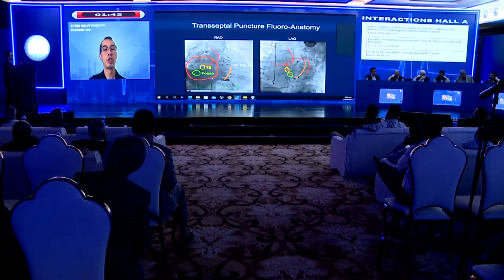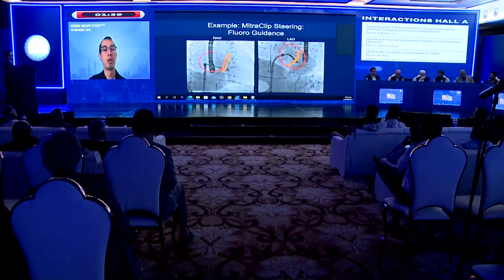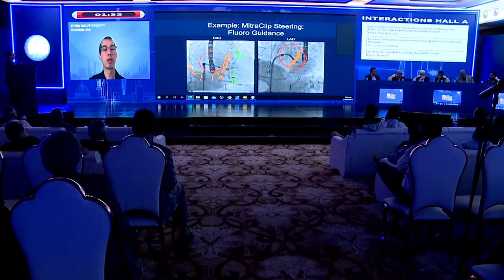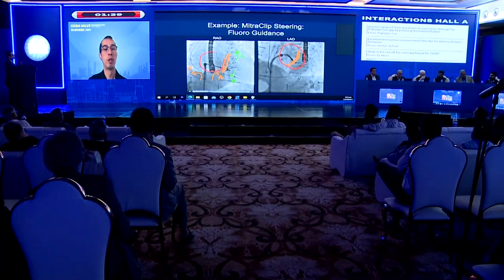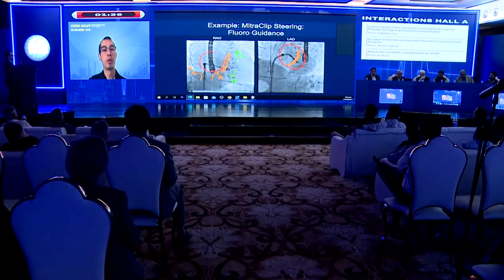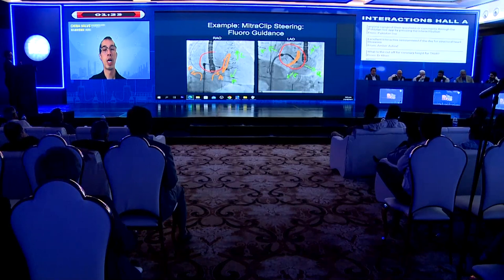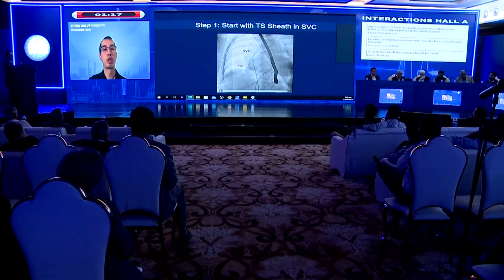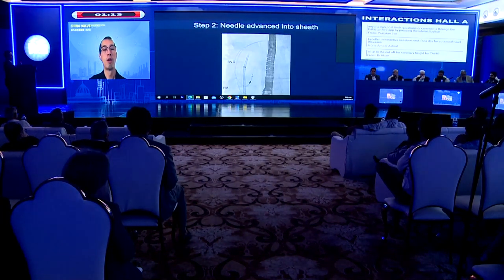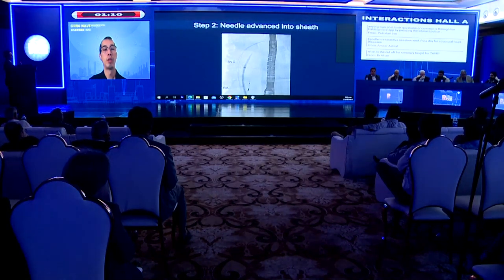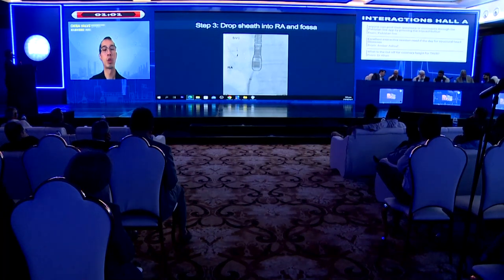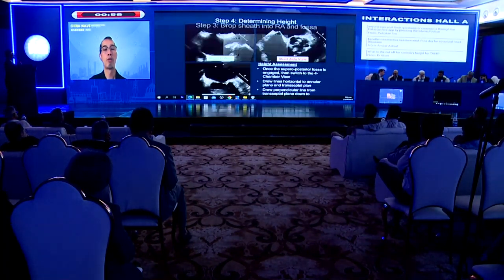An example is shown with an ASD device and two clips visible. On the RAO view, posterior movement to gain height goes to the left side of the screen; on LAO, the direction is confirmed. Inside the transeptal sheath from the SVC, the 0.032-inch wire is advanced, then the needle is advanced near the tip of the dilator. The assembly is then pulled down, and the RAO projection is used to see how anterior the needle is. The characteristic 'drop' is looked for on both echo and fluoroscopy as the needle tents the fossa ovalis.